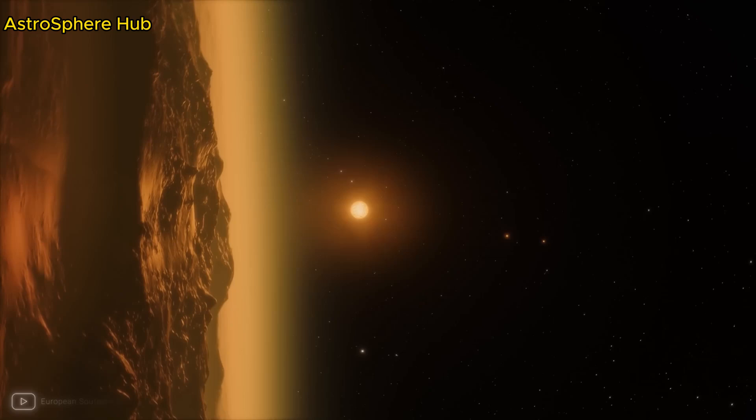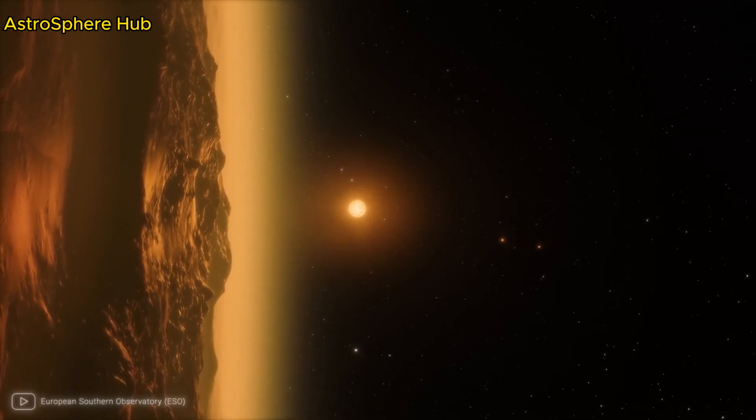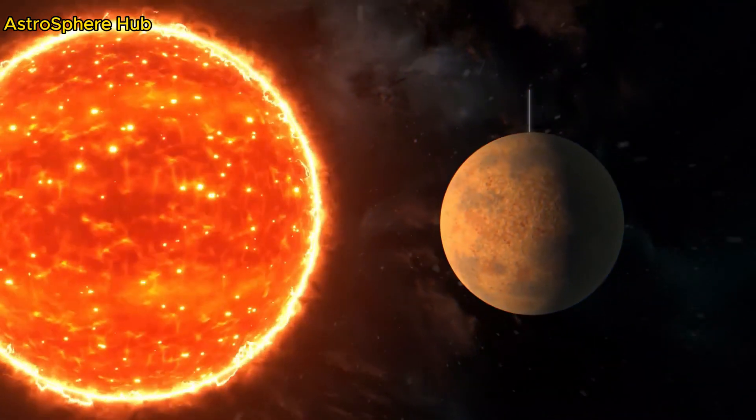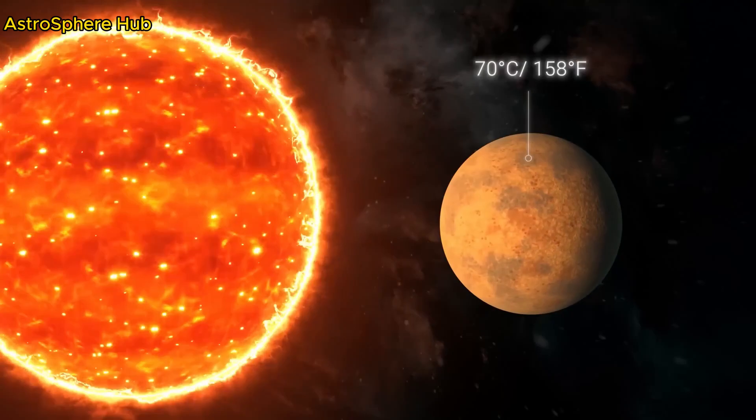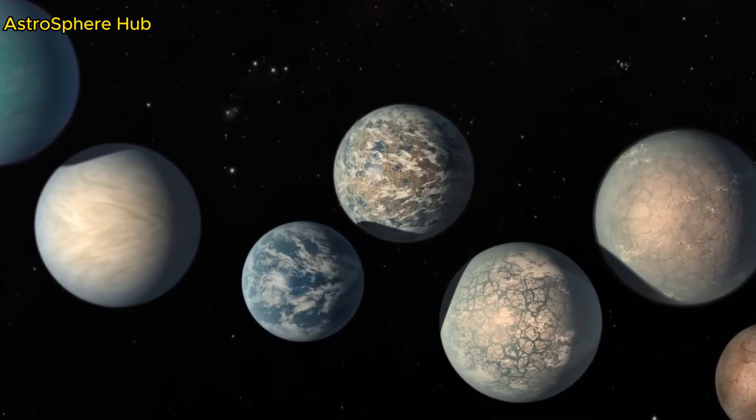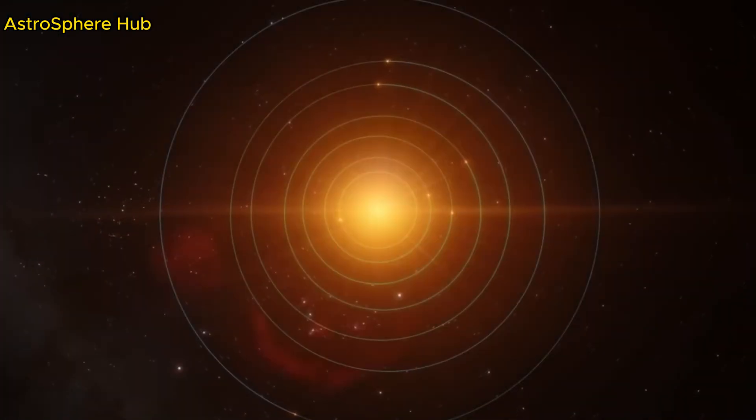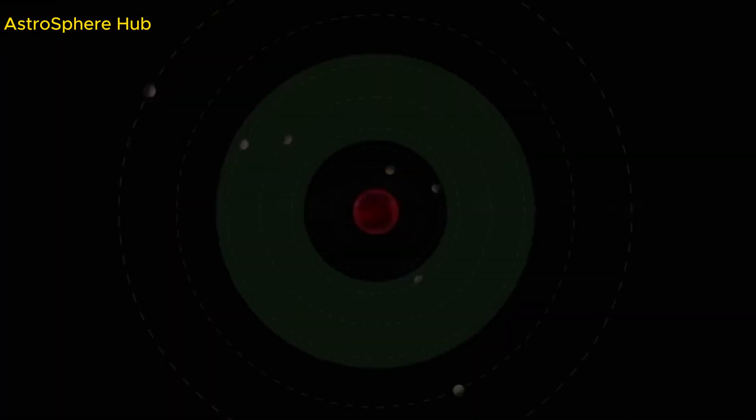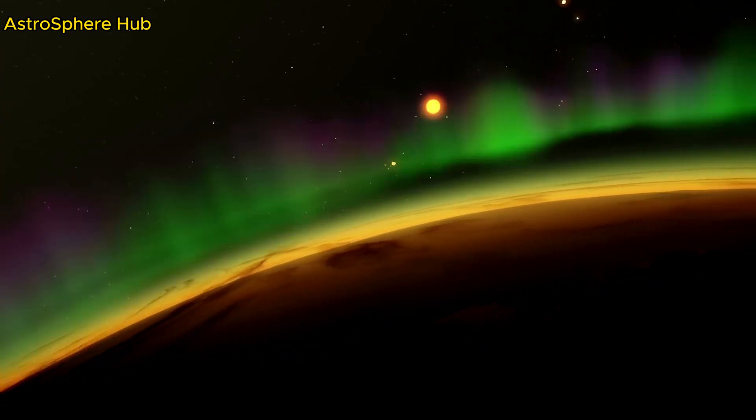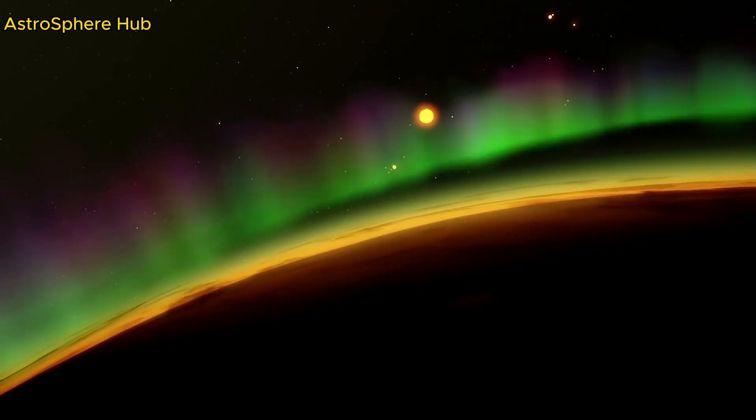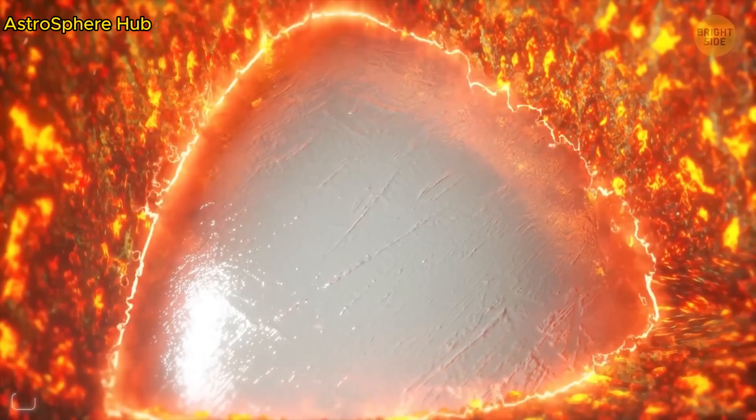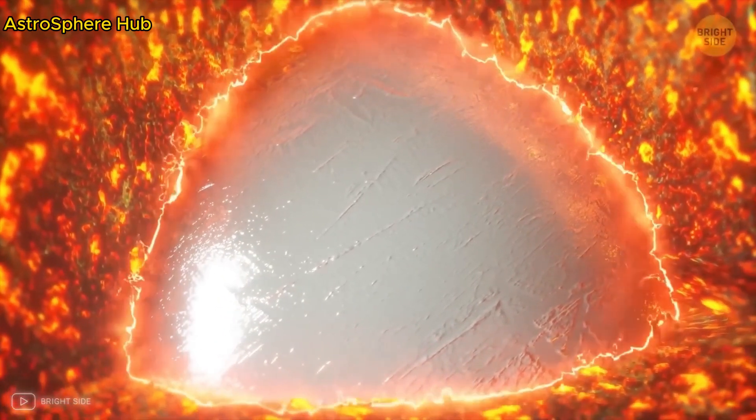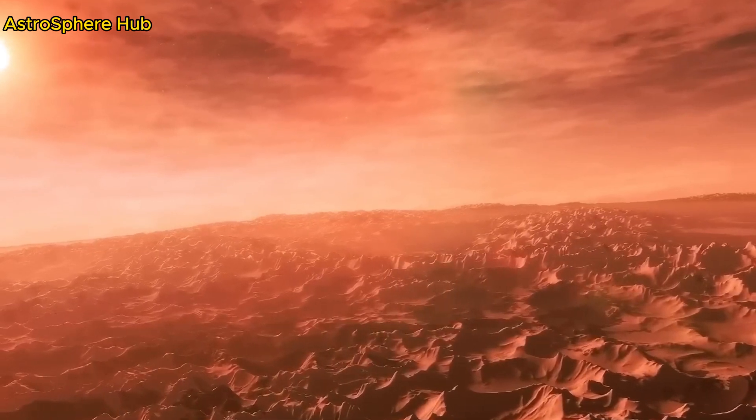Located in the habitable zone of its parent star, TRAPPIST-1e could hold a thick oxygen-rich atmosphere. And all the hydrogen could have escaped its atmosphere because of how light it is, which is good news since it's a greenhouse gas. If TRAPPIST-1e began with more water than Earth or Mars and retained it on the surface over time, its climate could be strikingly similar to what we enjoy on our own planet.